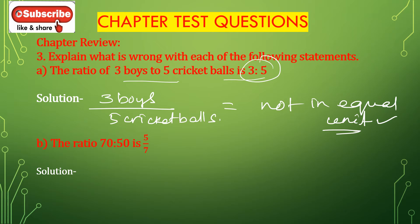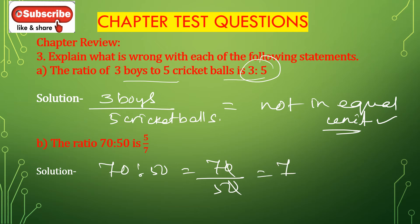Bit B: The ratio of 7 is to 50 is stated as 5 is to 7. But 7 is to 50 equals 70 divided by 50, and cancelling the zero you get 7 divided by 5, which is not equal to 5 divided by 7. So this is incorrect. The ratio of 70 is to 50 is 7 divided by 5.